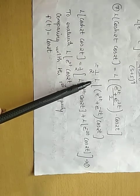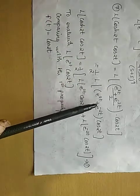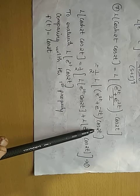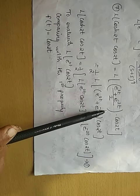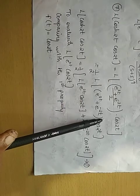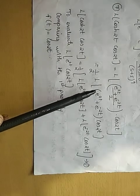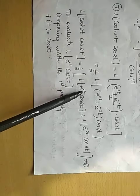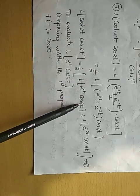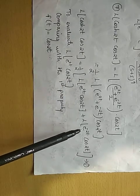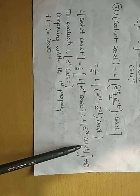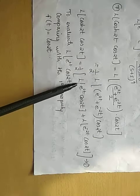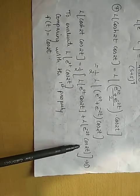What remains inside the bracket is the Laplace transform of (e raised to 2t plus e raised to minus 2t) into cos 2t. We multiply cos 2t into each term and separate the L operator, giving: Laplace transform of e raised to 2t cos 2t, plus Laplace transform of e raised to minus 2t cos 2t. We mark this as equation number 1 and solve each term separately.